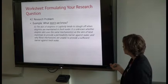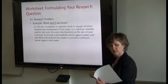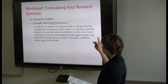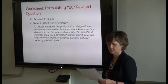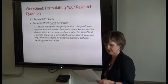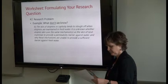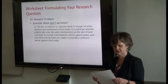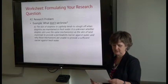On the worksheet, number two looks at the research problem with two components. For part A — what is unknown or unresolved — the dolphin example states: the skin of dolphins in captivity tends to slough off when maintained in fresh water; it's unknown whether dolphin skin uses the same mechanisms as land mammals to provide a permeability barrier against water and why those mechanisms are unable to provide a sufficient barrier. For the writing center example: writing center effectiveness is measured by number of visitors, not actual student outcomes, and we don't know the best way of measuring whether and how writing centers help students improve their writing.